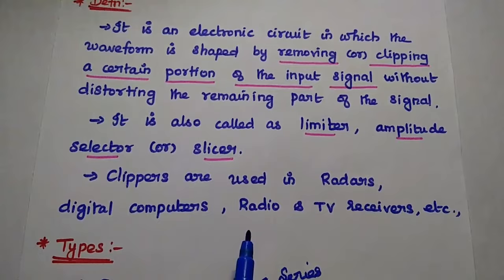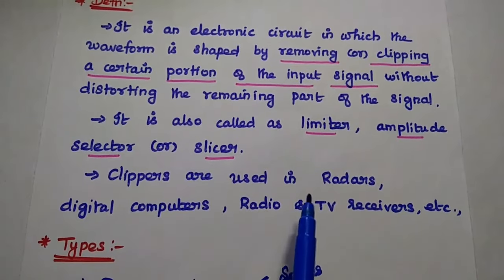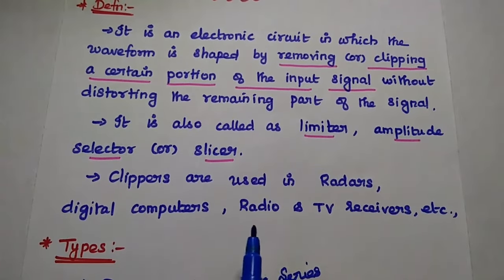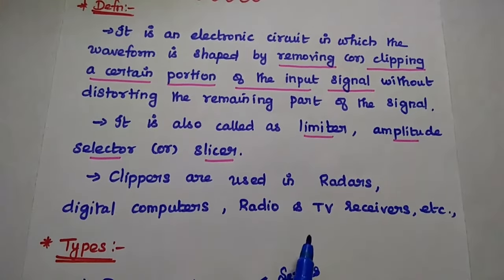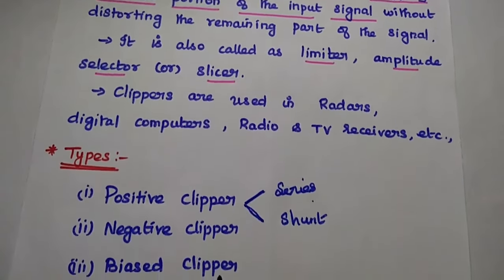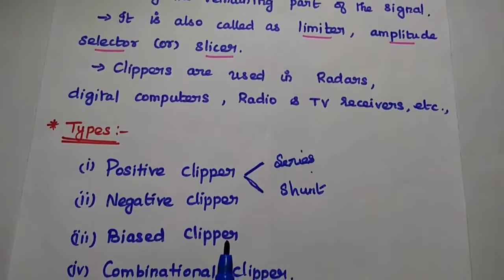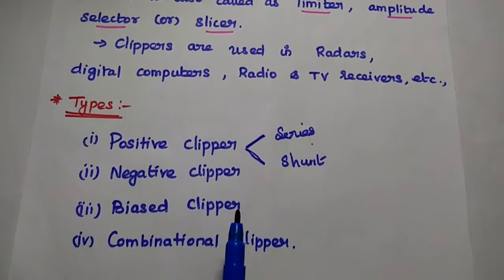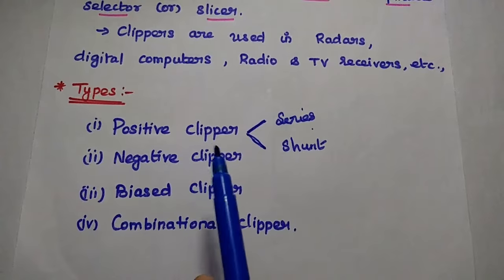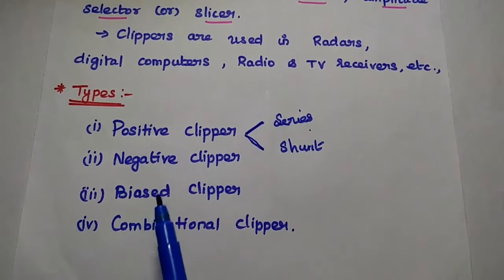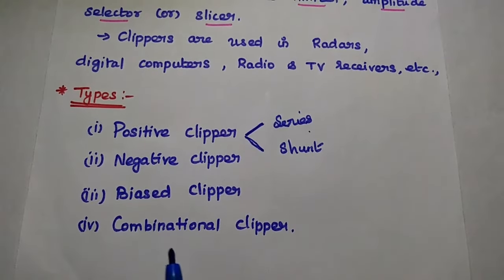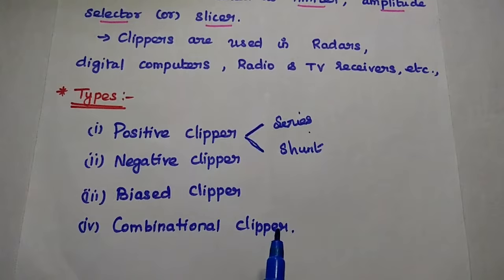Clippers are widely used in radars, digital computers, radio and TV receivers. There are four types of clippers available: positive clipper, negative clipper, biased clipper, and combinational clipper.